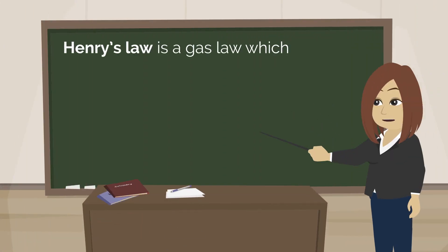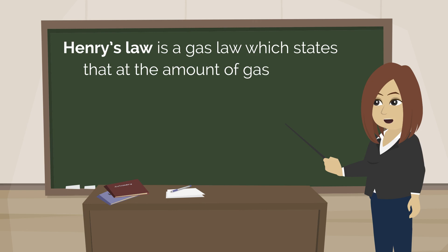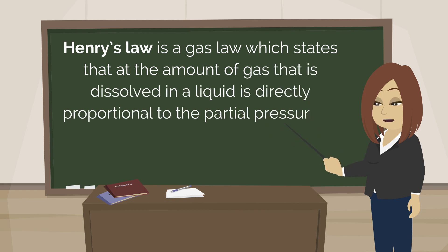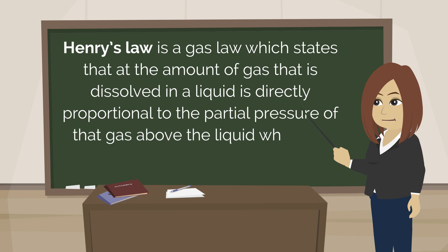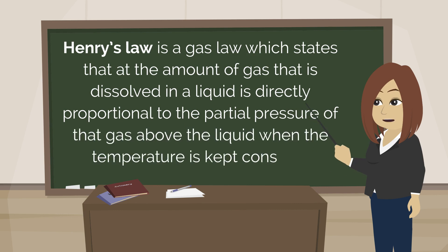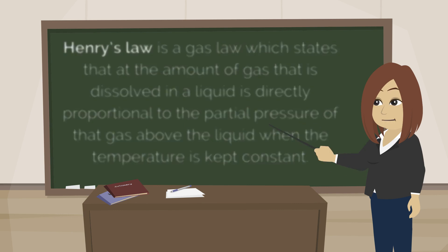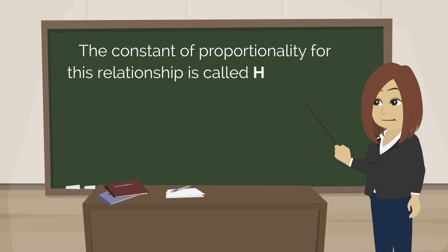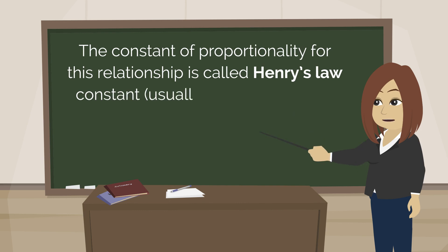Henry's law is a gas law which states that the amount of gas that is dissolved in a liquid is directly proportional to the partial pressure of that gas above the liquid when the temperature is kept constant. The constant of proportionality for this relationship is called Henry's law constant, usually denoted by KH.